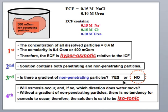So when we ask about this gradient of non-penetrating particles, we say that there's no gradient here, and so osmosis will not occur, and there's no net movement of water into or out of the cell.